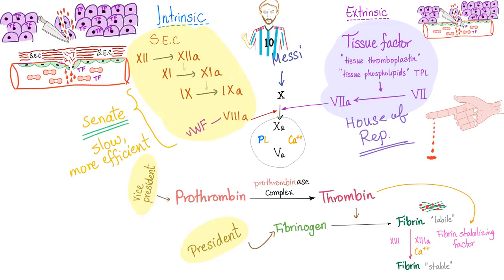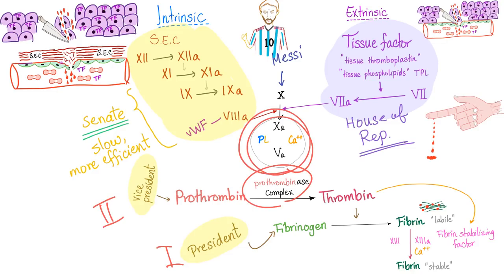The coagulation cascade is best explained from the bottom. Fibrin is the meshwork; fibrinogen is the precursor to fibrin. Then we have thrombin, present in a precursor inactive form called prothrombin. So prothrombin → thrombin → fibrinogen → fibrin. Fibrinogen is factor 1, the president; prothrombin is factor 2, the vice president. Then we have the prothrombinase complex — a committee of four members: two numbers and two words. The two numbers are 5 and 10, with factor 10 being more important. The two words are calcium and phospholipids.